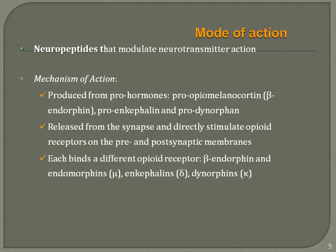Endogenous opioids are released from the synapse and directly stimulate opioid receptors on pre- and post-synaptic membranes. They bind to different opioid receptors: beta-endorphin and endomorphins bind to mu, while enkephalins and dynorphins bind to kappa and delta receptors.